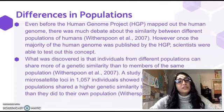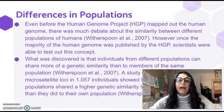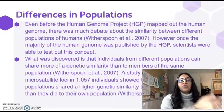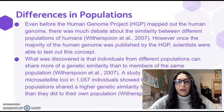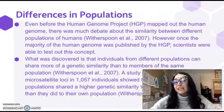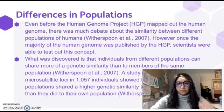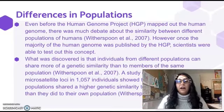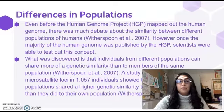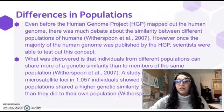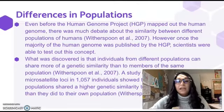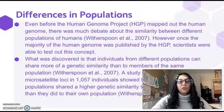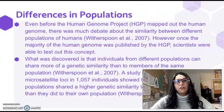Regarding differences in populations — after the Human Genome Project mapped out the human genome, there was a debate about genetic similarity between different human populations, such as those in Asia versus Europe. Scientists discovered that individuals between those populations are, in some cases, more genetically similar to each other than individuals within each population. A study of 377 microsatellite loci in about 1,000 individuals showed that 38% of the time, Asian populations shared higher genetic similarity to European populations than to their own.